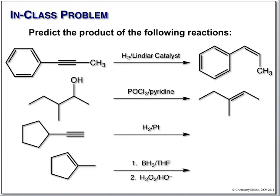Our next reaction: nothing poisoned about this catalyst — plain old platinum on charcoal, a very powerful catalyst used to reduce alkenes back in Chapter 8. This will reduce the triple bond first to an alkene, but because the catalyst is so powerful, before the compound leaves the surface it reacts with a second mole of hydrogen and reduces all the way — converting the alkyne into an alkane.